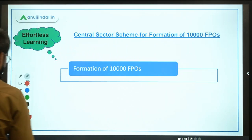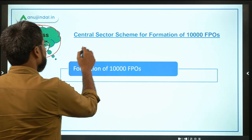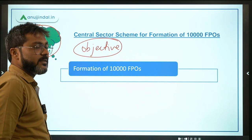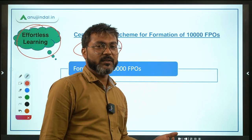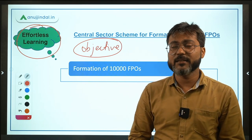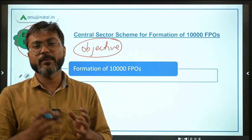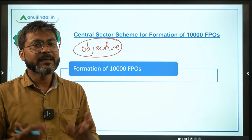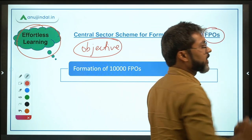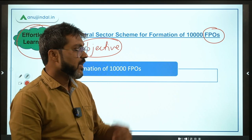Let's talk about the scheme. First of all, let's simplify the objective. There is actually no need to simplify it, because the name itself says it all: Central Sector Scheme for Formation and Promotion of 10,000 FPOs — Farmer Producer Organizations. The government intends to form and promote 10,000 Farmer Producer Organizations.